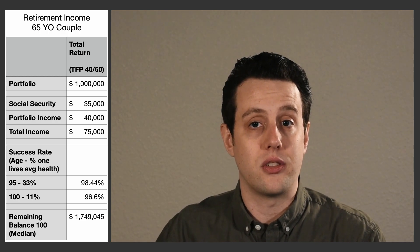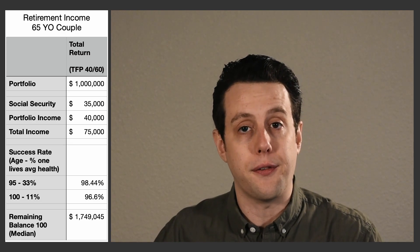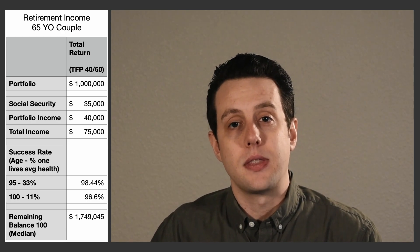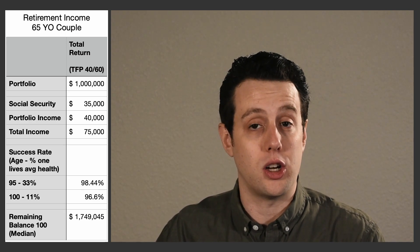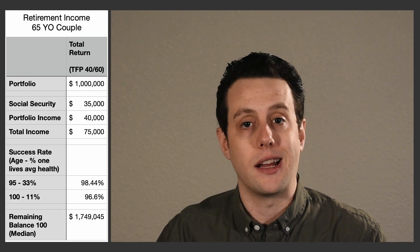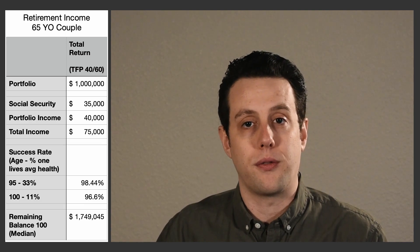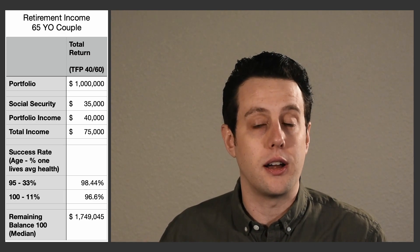I like to put this data in a spreadsheet with a column representing this scenario — a $1 million portfolio in a 35-year retirement for a couple retiring at age 65. I have rows for age and the probability of one person living to that age from Longevity Illustrator: 33% chance one spouse lives to 95, 11% to 100 for an average-health couple. Then I enter the probability of success for these ages and the median portfolio balance. I'm more concerned about the success rate, but also want to see how much money I might have when I die.